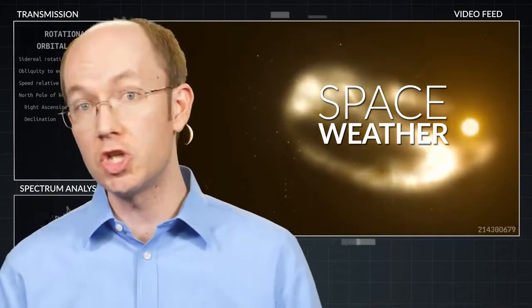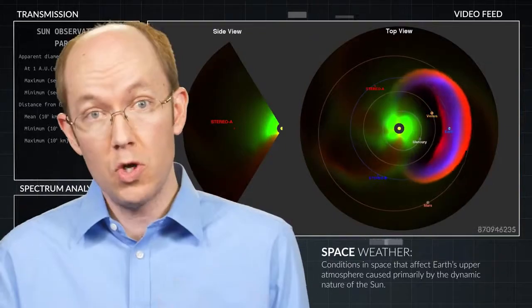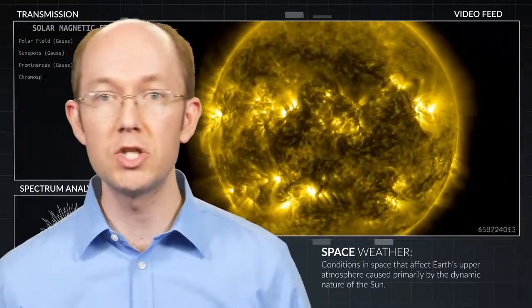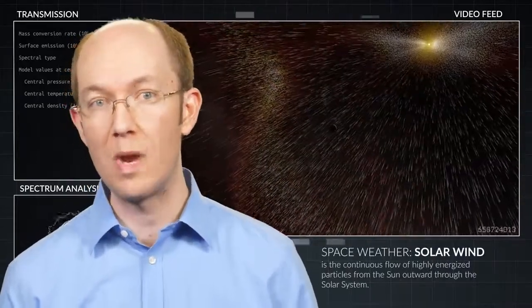Sometimes we use the term space weather to describe various fluctuations and changes in space, especially that affect us here on Earth. Most of these fluctuations originate from the active nature of the Sun. The mechanism that drives the occurrence of space weather is a feature known as the solar wind.